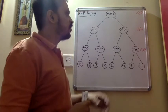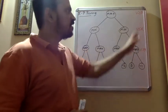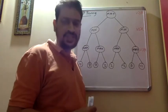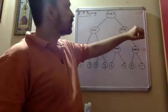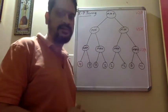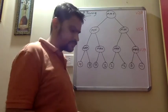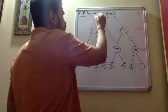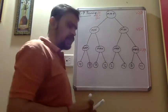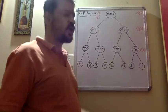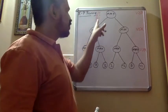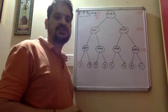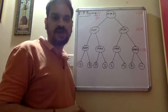In the alpha-beta pruning search, we use some conditions. If these conditions are satisfied, we don't have to look at the remaining tree. There are three variables that we use: one is called V, which is the same as used previously; the second is alpha, and the next is beta. Alpha is for the maximizer and beta is for the minimizer.